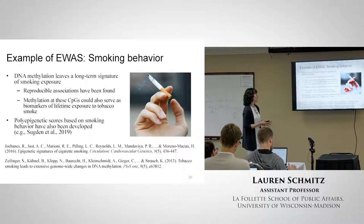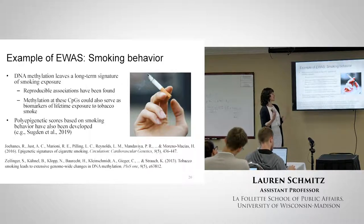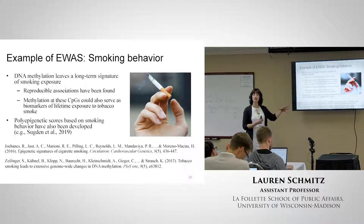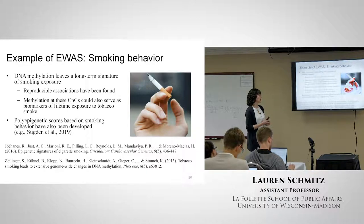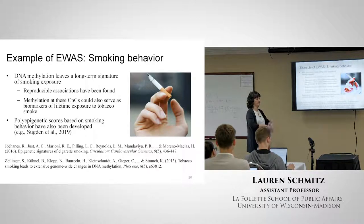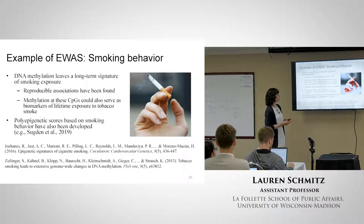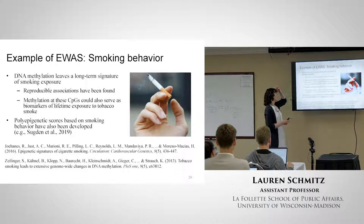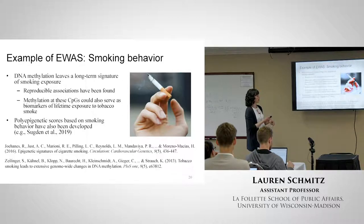There's some work now being done to develop polyepigenetic scores - much like a polygenic score, but using results from EWAS to create a score that summarizes methylation patterns across the genome. Some have been developed recently by Karen Sugden and Caspi at Duke University. That's something that is starting to come around a little bit more.